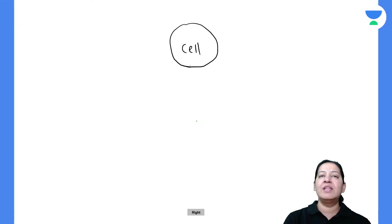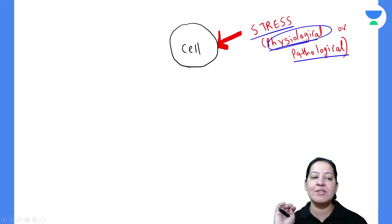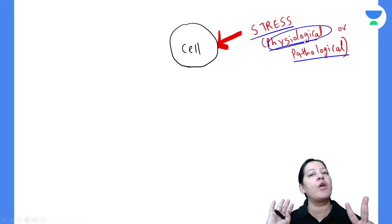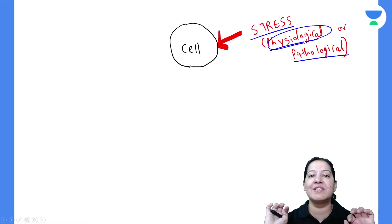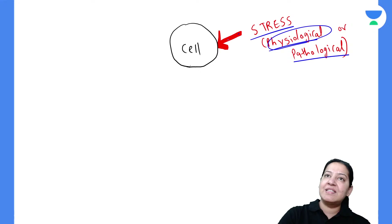If any stress is applied to a cell — it can be physiological or pathological — the homeostasis is disturbed. Physiological stress is neither normal nor a disease; for example, pregnancy, menstruation, and aging are examples of physiological stress. Whenever a cell receives either physiological or pathological stress, it will respond in one of three ways.